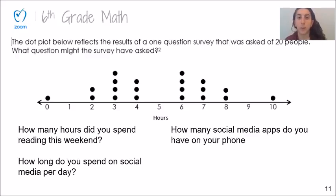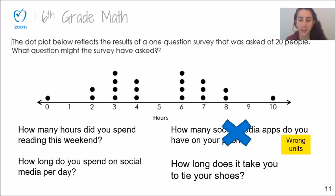One example of a question that wouldn't work is, how many social media apps do you have on your phone? That wouldn't work because remember, the unit in my dot plot is hours, and the answer to that question does not have a unit of hours. Another question that wouldn't work is, how long does it take you to tie your shoes? Just like taking seven hours to brush your teeth is unreasonable, taking seven hours or even 10 hours to tie your shoes is also unreasonable.